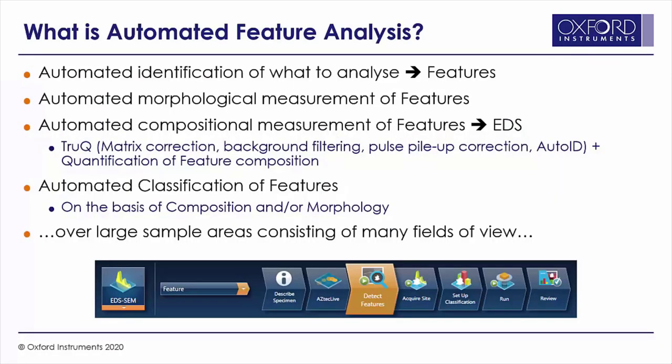Automated feature analysis is a process which automates many of those tasks. It automates the identification of what we want to analyse to produce features. It automatically measures the morphological properties of those features. It automates the compositional measurement of those features with EDS, including all of the algorithms that ensure the results we get are right even when we're working at the highest of speeds. It also automates interpretation to an extent by involving classification schemes — being able to group features by their composition and/or their morphology — and it can do this over very large areas.